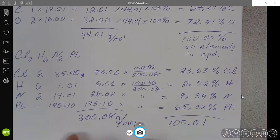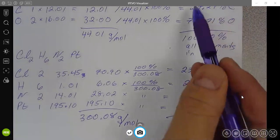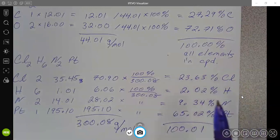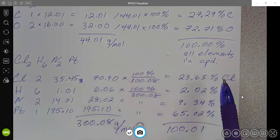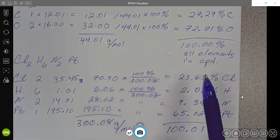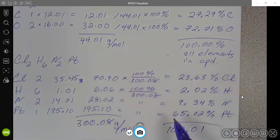Remember, the language is percent composition is always all of the percents for all of the elements in a given compound. Mass percent would be mass percent typically of a single element. So I could ask you for the percent composition of cisplatin and it would be all four of these numbers. I could also ask you for the mass percent of platinum in cisplatin, and it would just be the 65.02%.